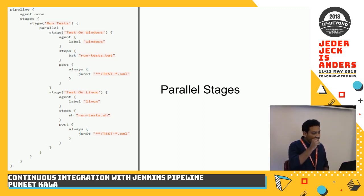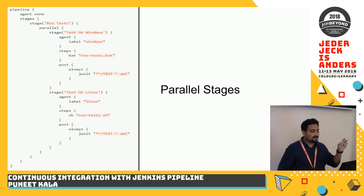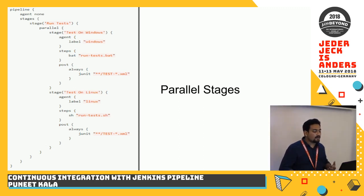For example, you can have unit tests and system testing running together in parallel, or tests running on Chrome and Firefox in parallel, or tests for a Windows environment and a Linux environment running in parallel. You define this with a 'parallel' keyword, inside which you define the stages you want to run in parallel.